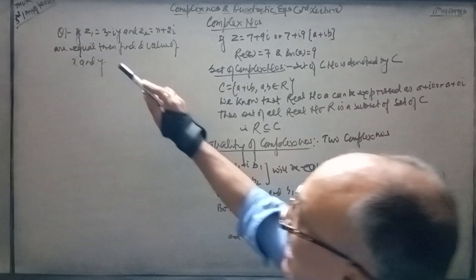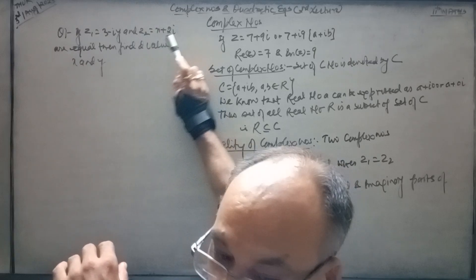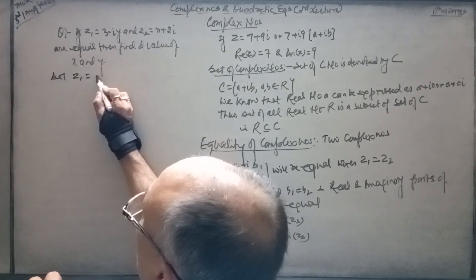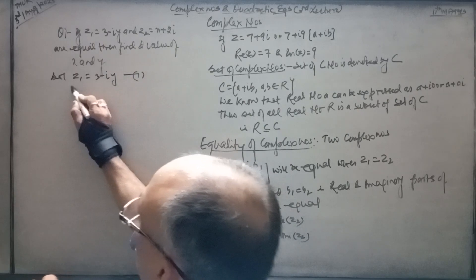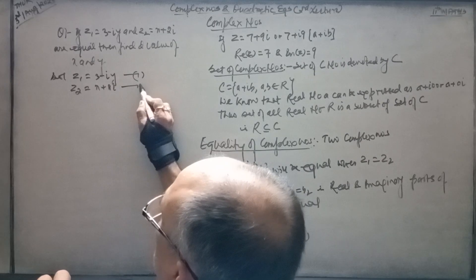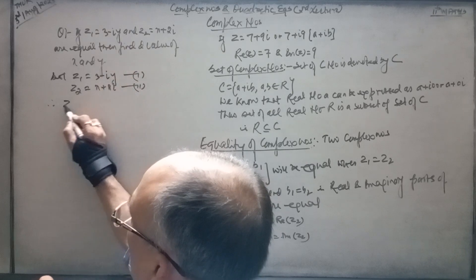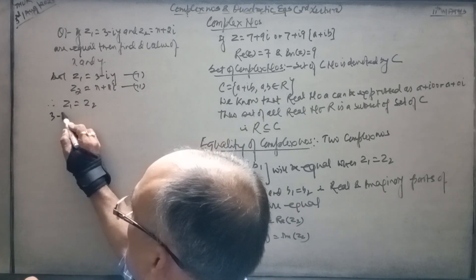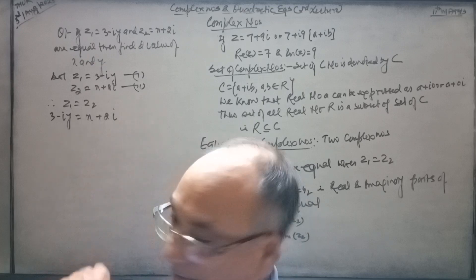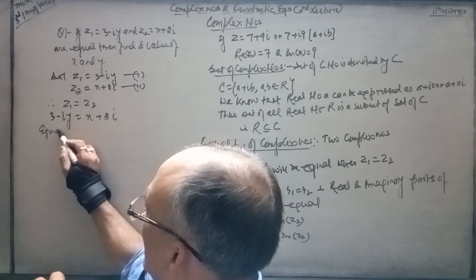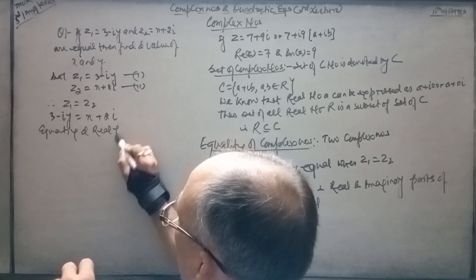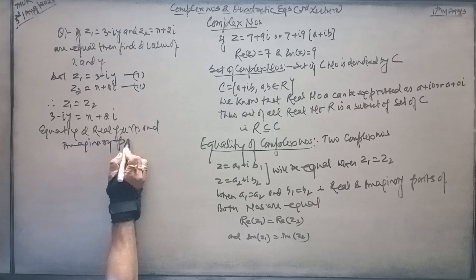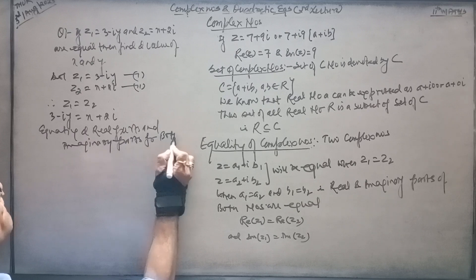Question: if z1 equals 3 minus iy and z2 equals x plus 2y are equal, find the values of x and y. Solution: since z1 equals z2, we write 3 minus iy equals x plus 2y. Now equating the real parts and imaginary parts from both sides.